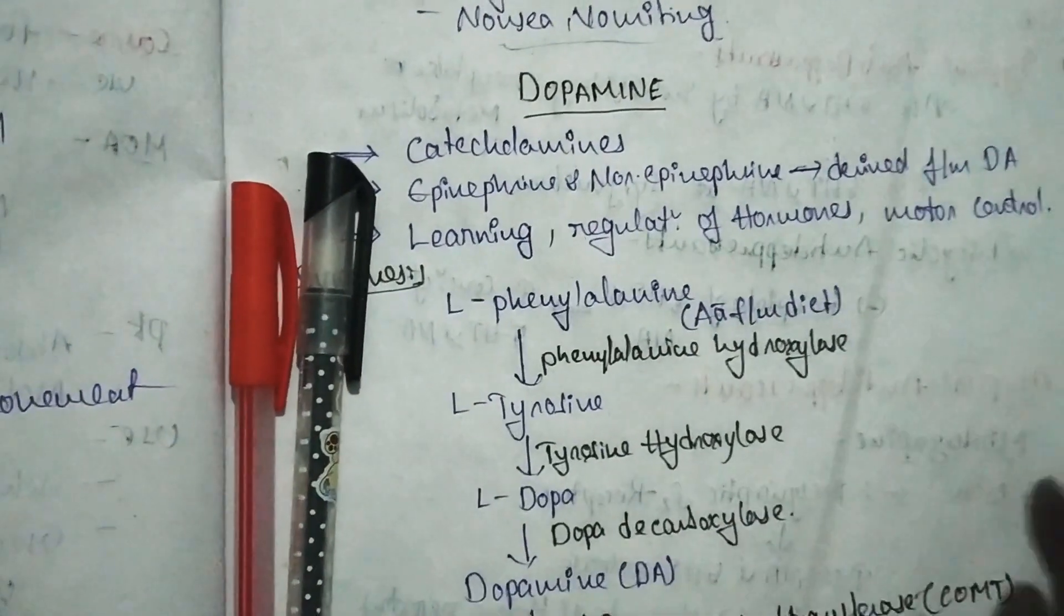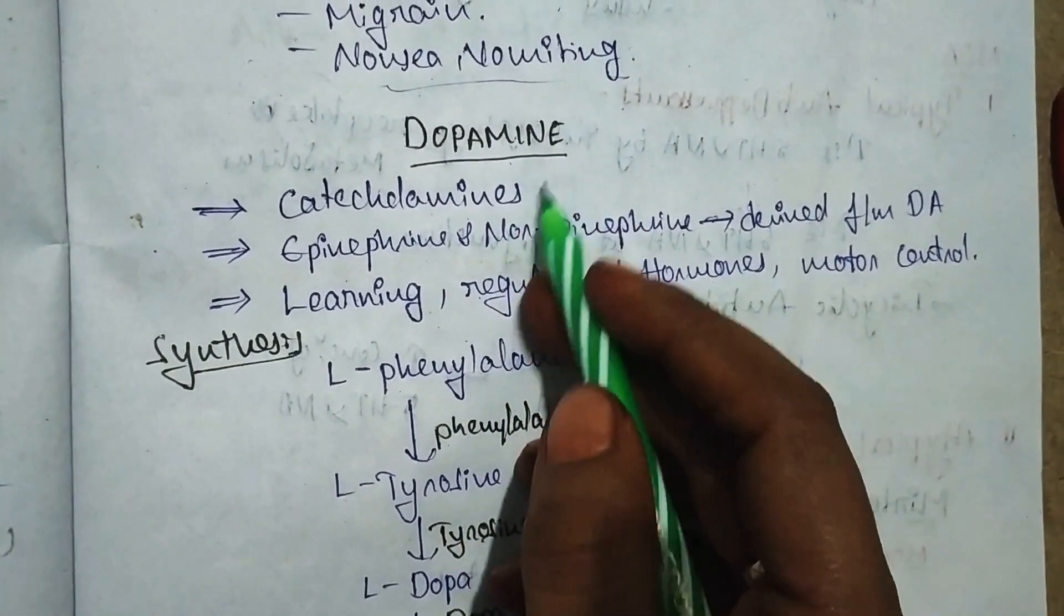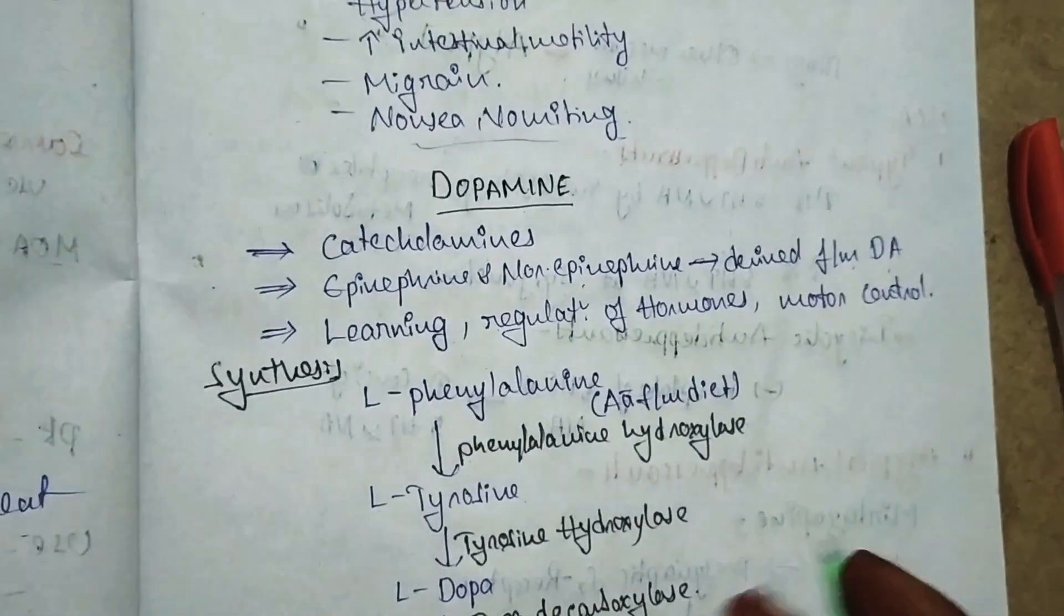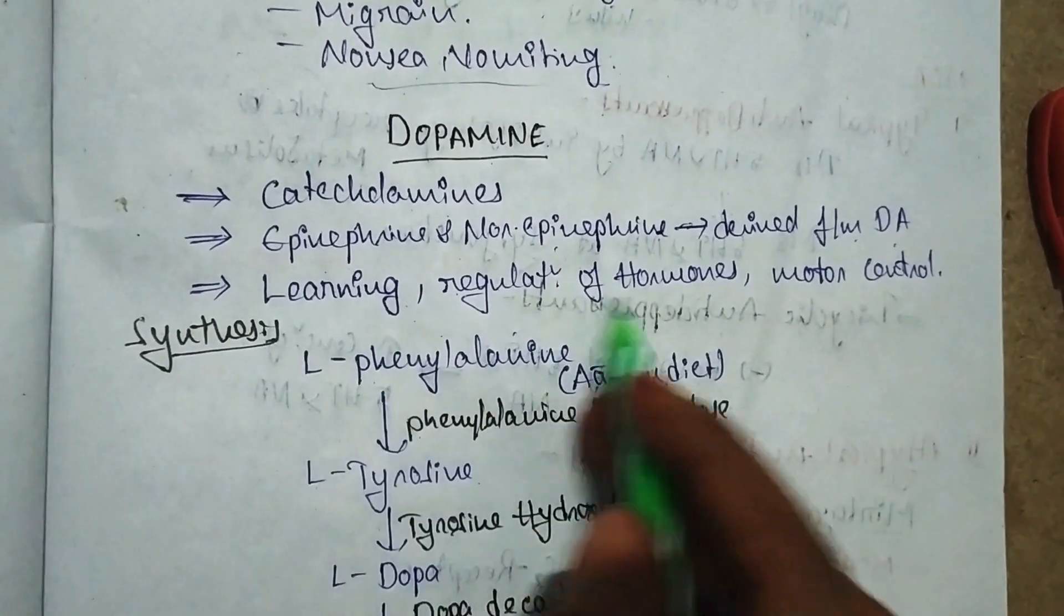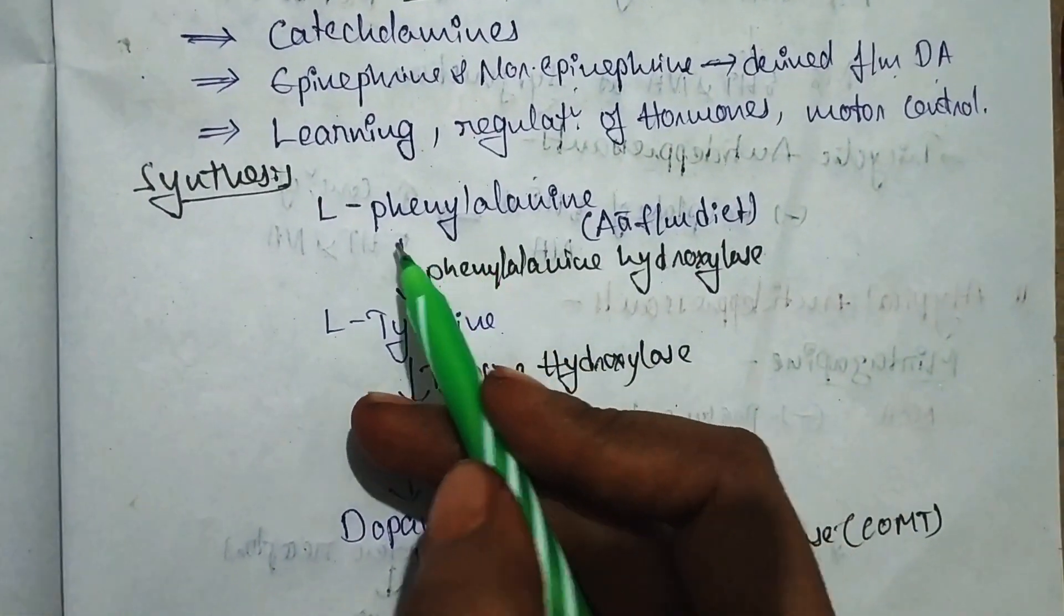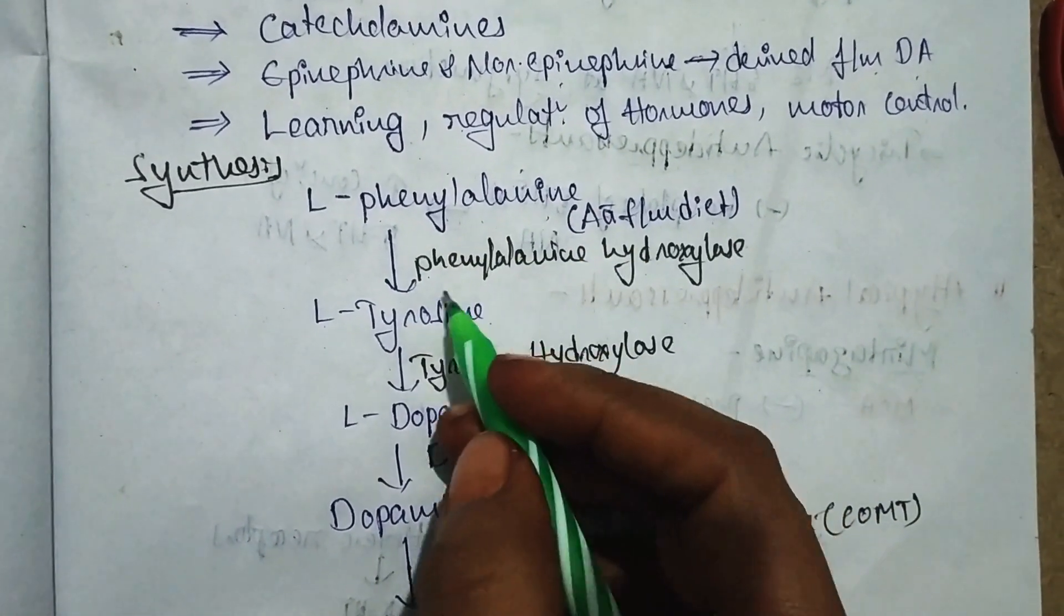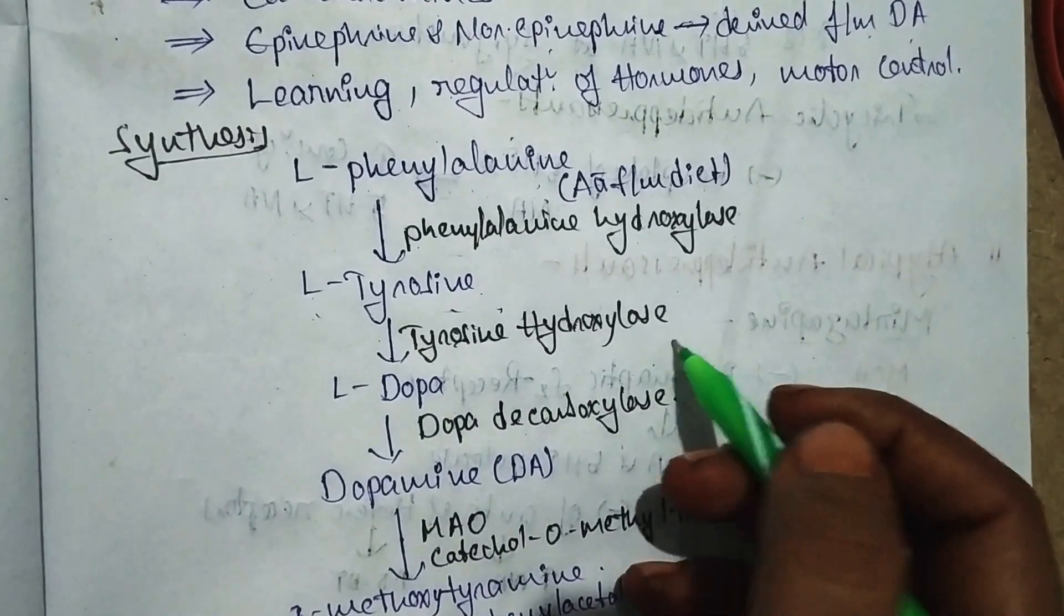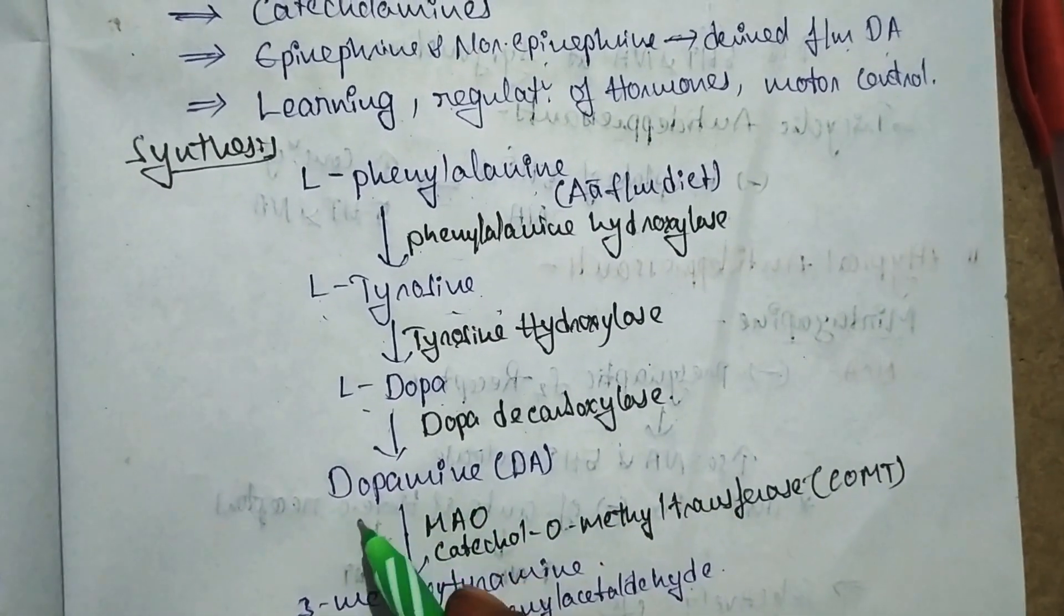The next neurotransmitter is dopamine, derived from the category of catecholamines. Epinephrine and norepinephrine produce dopamine. It regulates learning, regulation of hormones, and motor control. Synthesis: it is synthesized from the primary amino acid L-phenylalanine, which can be taken by diet and water. In the presence of phenylalanine hydroxylase, L-tyrosine forms. In the presence of tyrosine hydroxylase enzyme, L-dopa or levodopa forms. In the presence of dopa decarboxylase, dopamine forms.